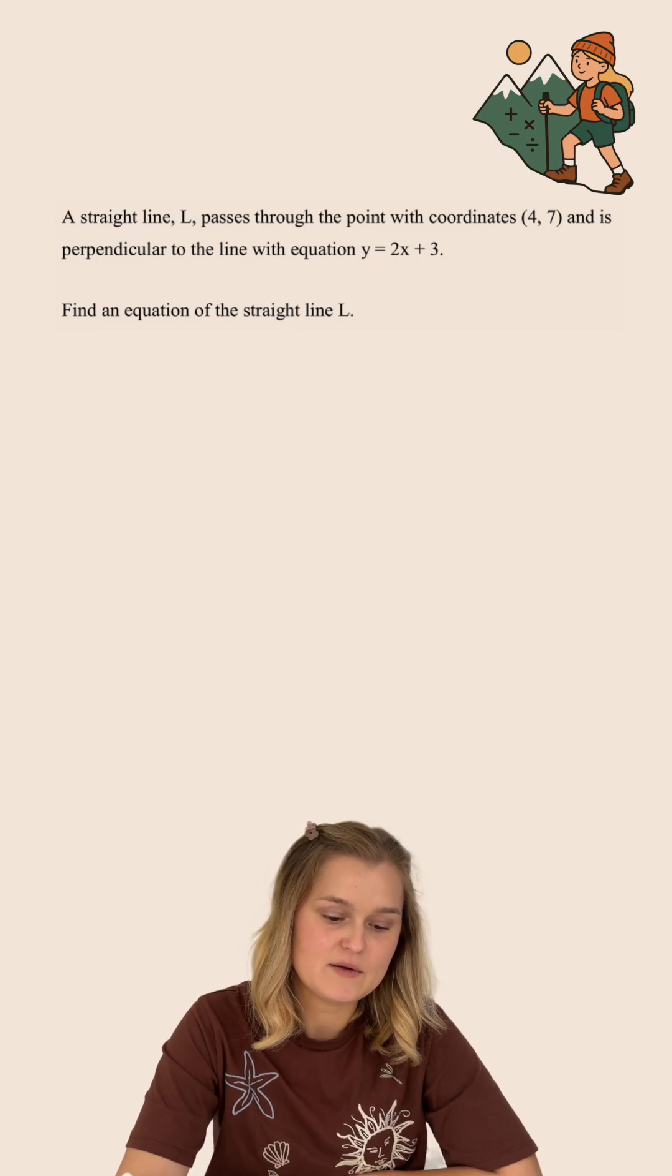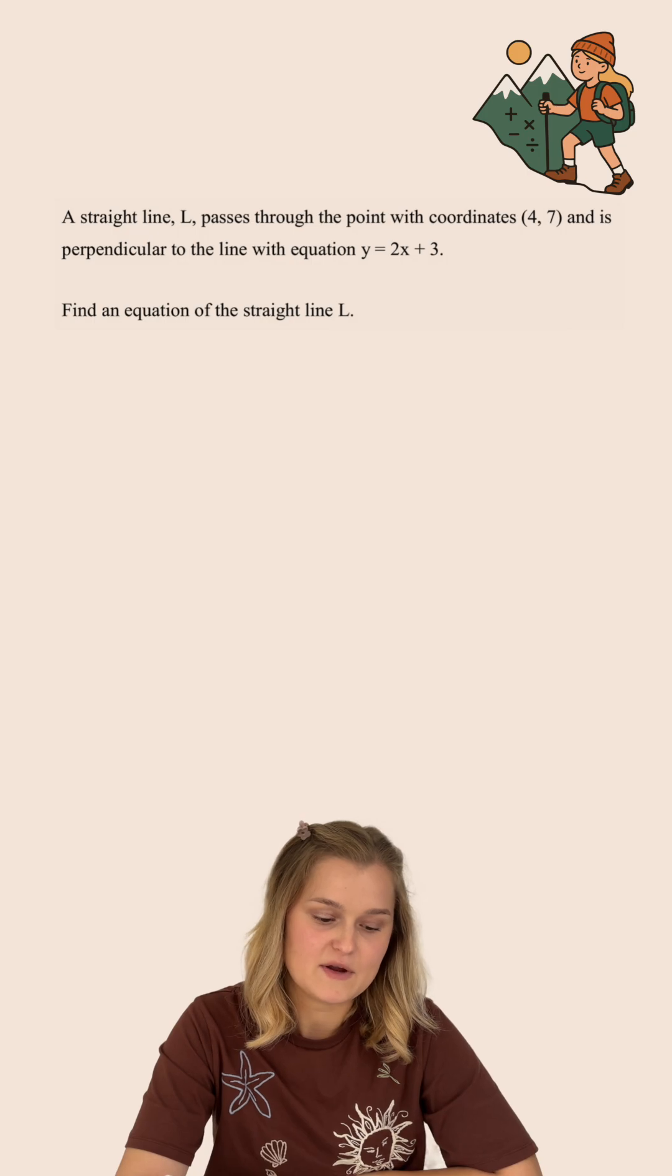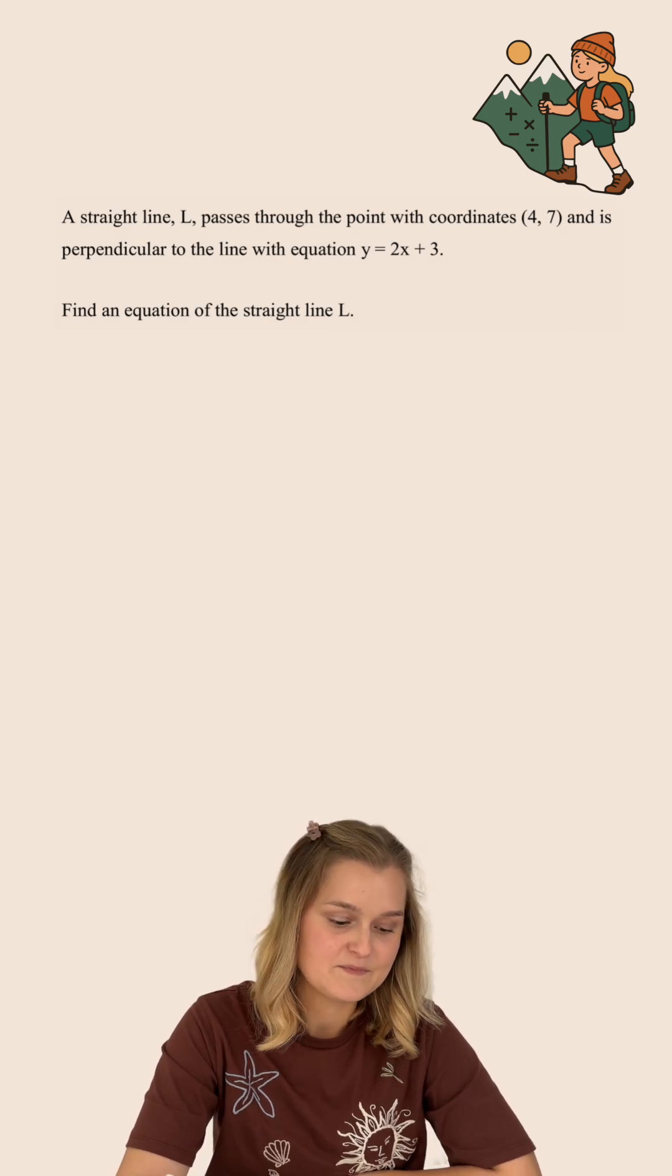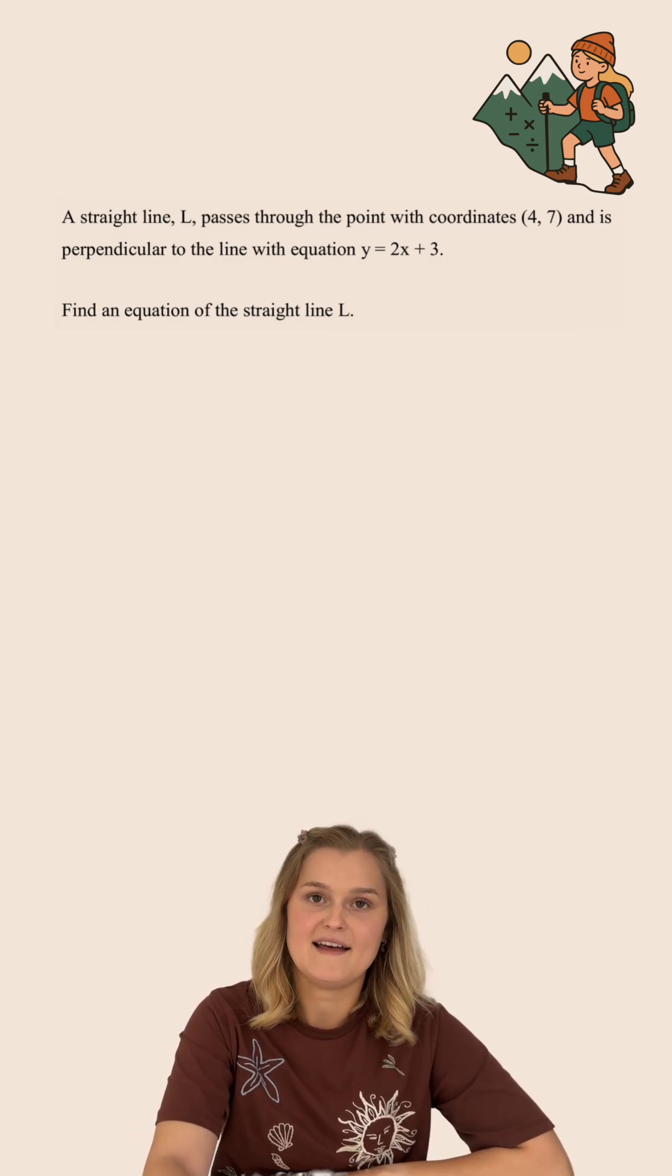A straight line L passes through the point with coordinates 4, 7 and is perpendicular to the line with equation y equals 2x add 3. Find an equation of the line L.